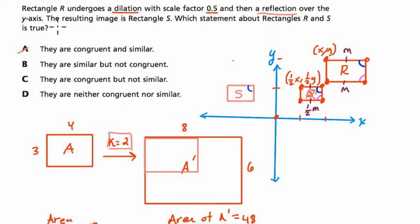So here we look at our choices. The answer can't be A, right? It says they are congruent and similar. Congruent means the two shapes are identical in every way except their location. And that's not true here, right? S is smaller than R.